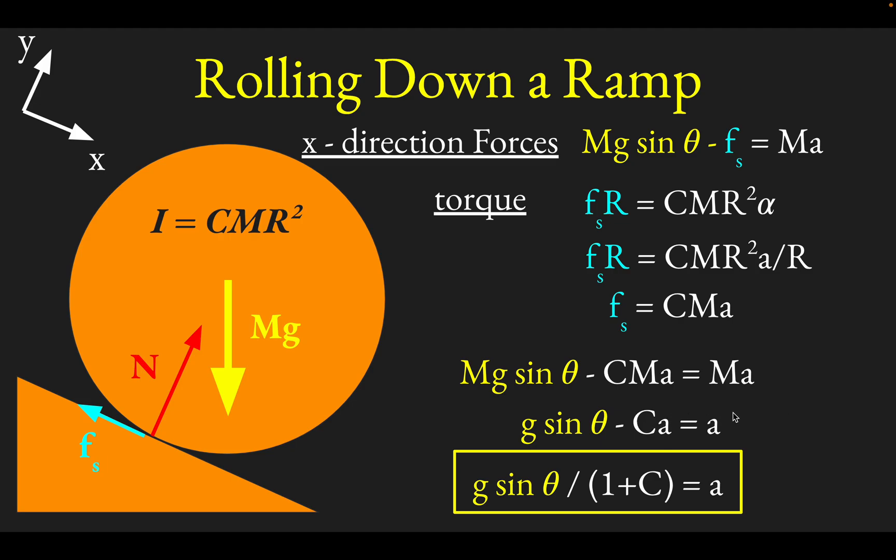And then dividing by 1 plus C to bring it back over to the left would give you g sine theta divided by 1 plus C equals A as a general result.